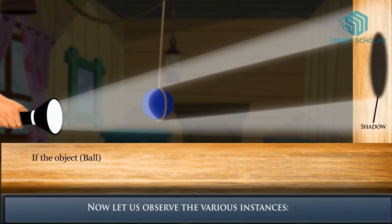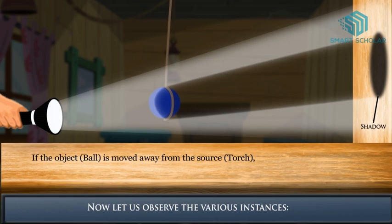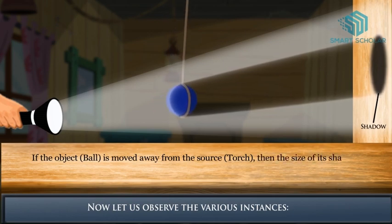If the object, which is the ball, is moved away from the source, which is the torch, then the size of the shadow decreases.